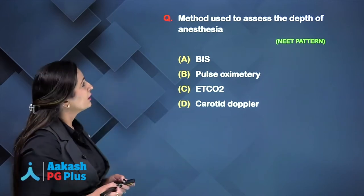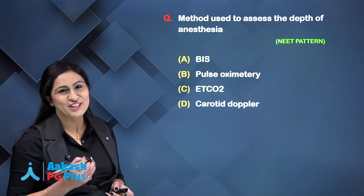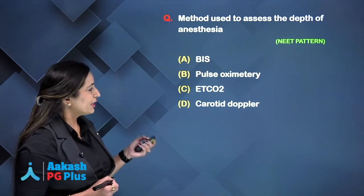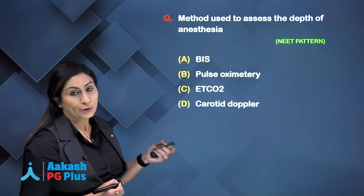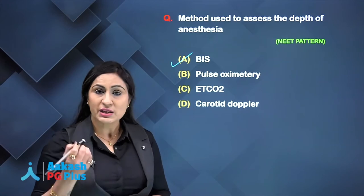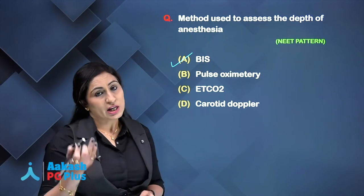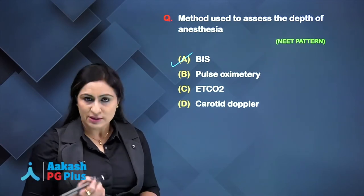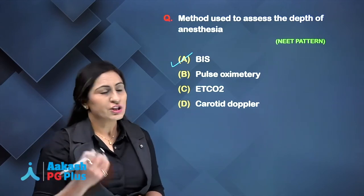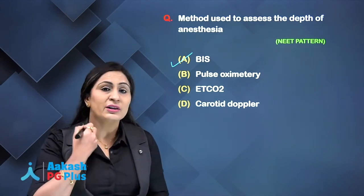Moving to our first question: the monitoring method used to assess the depth of anesthesia. The answer is bispectral index. Pulse oximetry tells you the saturation of hemoglobin in arterial blood, end-tidal CO2 tells you the end-tidal CO2, and carotid Doppler gives you flow in the carotid artery — which is not a mandatory intraoperative monitor.